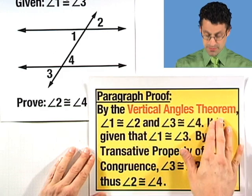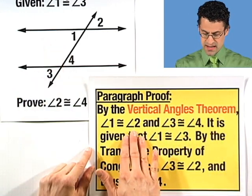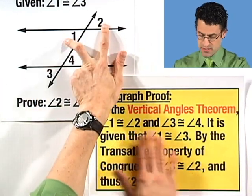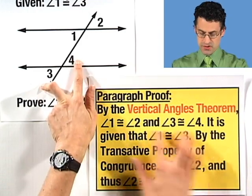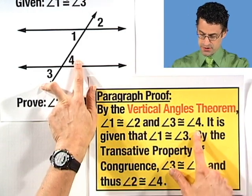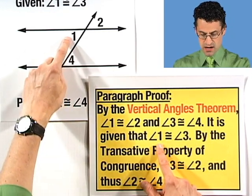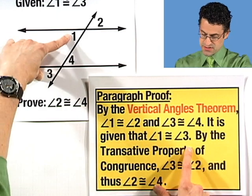So, by the vertical angles theorem, ah, vertical angles, I saw that coming. Angle one is congruent to angle two. Angle one is congruent to angle two, yep, they're vertical angles. And angle three is congruent to angle four, yep, they're vertical angles as well. So by the vertical angle theorem, we know this is true. It is given that angle one is congruent to angle three, so we're given this. See how it's written like that? We're given that.